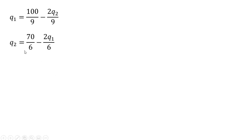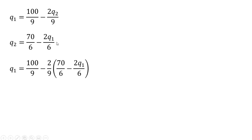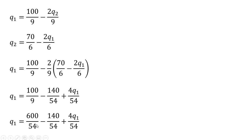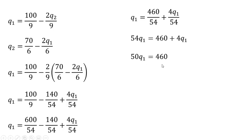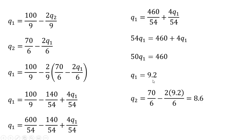Taking the top equation for Q subscript 1, we substitute in for Q subscript 2, plugging in 70 divided by 6 minus 2Q subscript 1 divided by 6. Getting a common denominator and multiplying everything through by 54, then simplifying, Firm 1's output is 9.2 units. For Firm 2's output, we plug 9.2 into its expression and find that Firm 2 will produce 8.6 units of output.